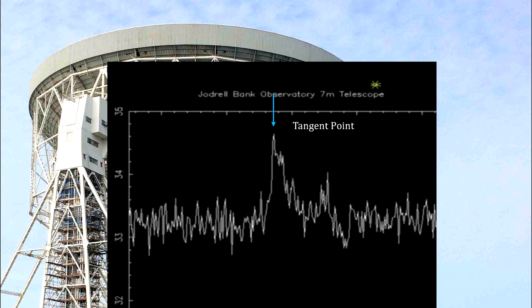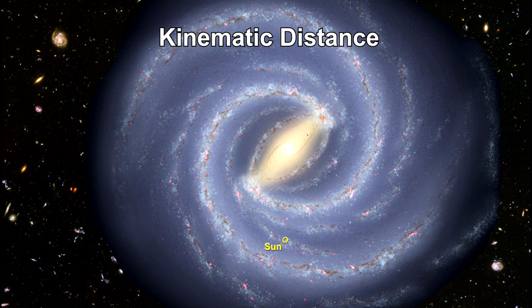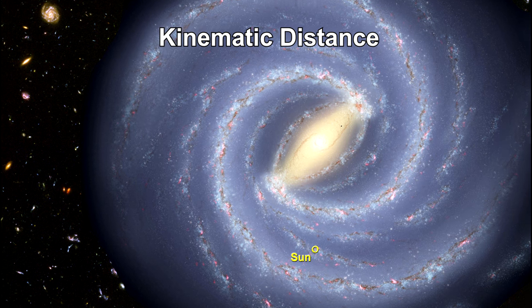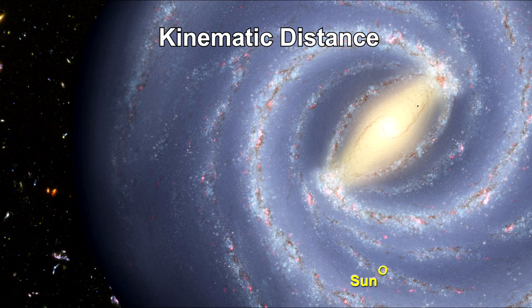We can use the Doppler shift of dust clouds to find the kinematic distance to the object and calculate how fast it is rotating around the center of the galaxy. In order to convert this radial velocity information into a rotational velocity and distance from the center of the galaxy, we use a technique called the tangent point method.